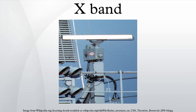The X-band is a segment of the microwave radio region of the electromagnetic spectrum. In some cases, such as in communication engineering, the frequency range of X-band is rather indefinitely set at approximately 7.0 to 11.2 GHz. In radar engineering, the frequency range is specified by the IEEE at 8.0 to 12.0 GHz. The term X-band is also used informally and inaccurately to refer to the extended AM broadcast band, where the X stands for extended.